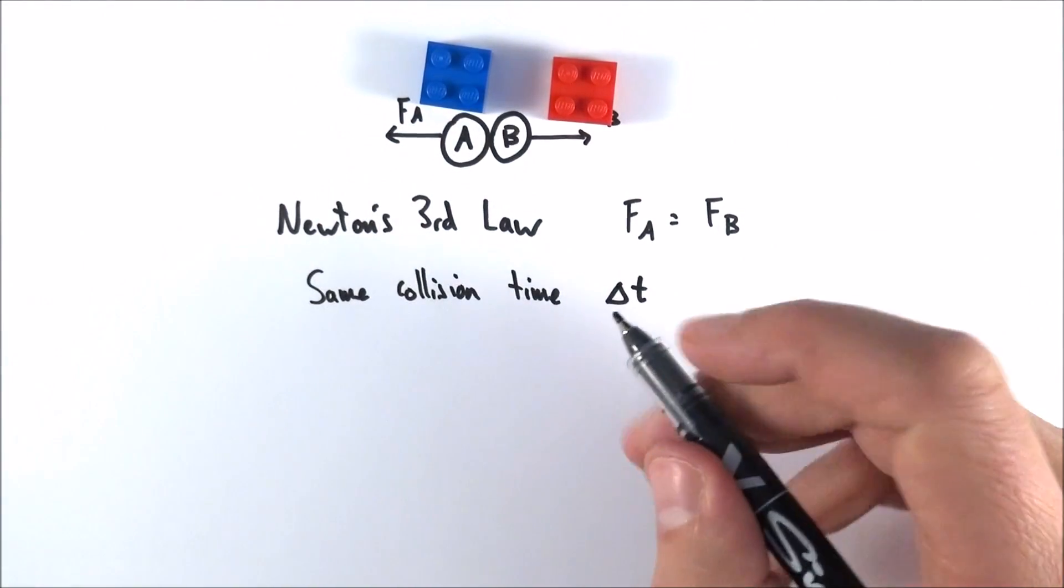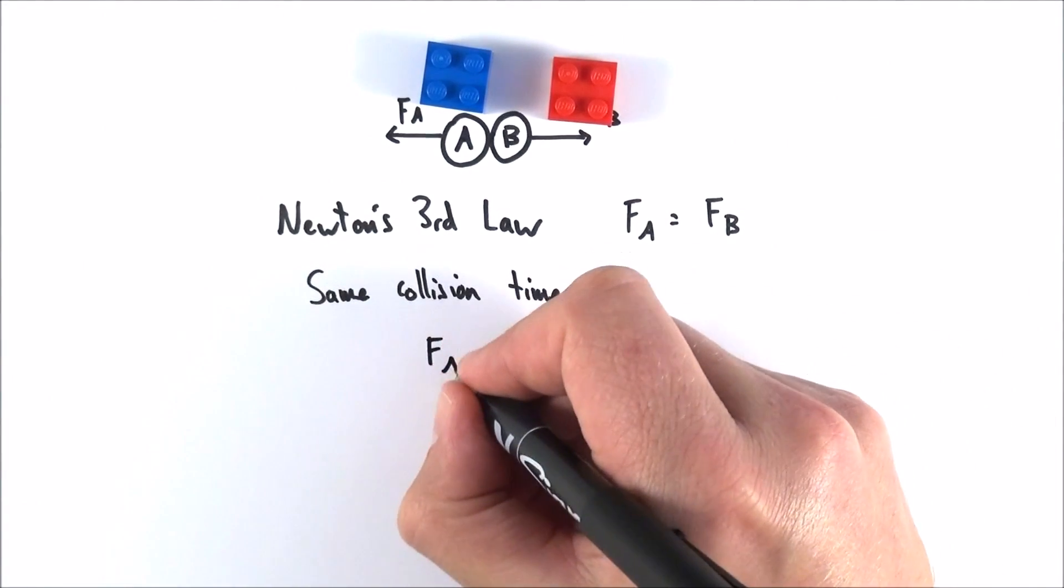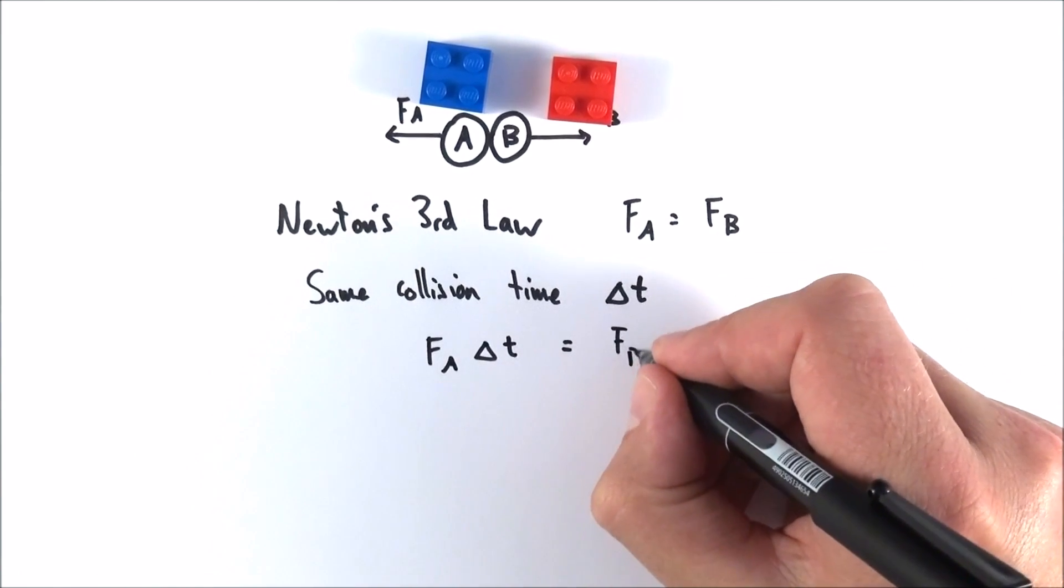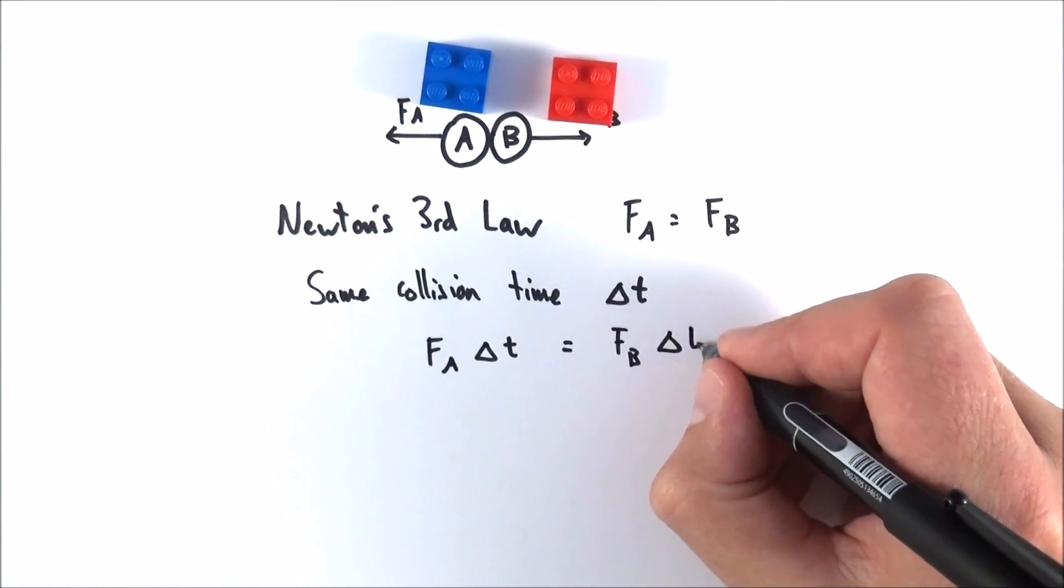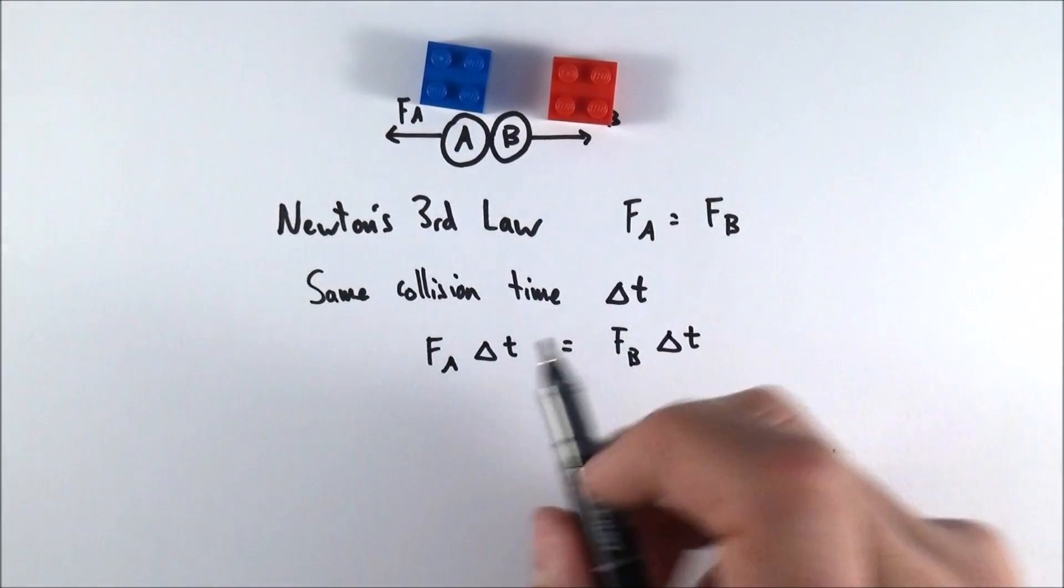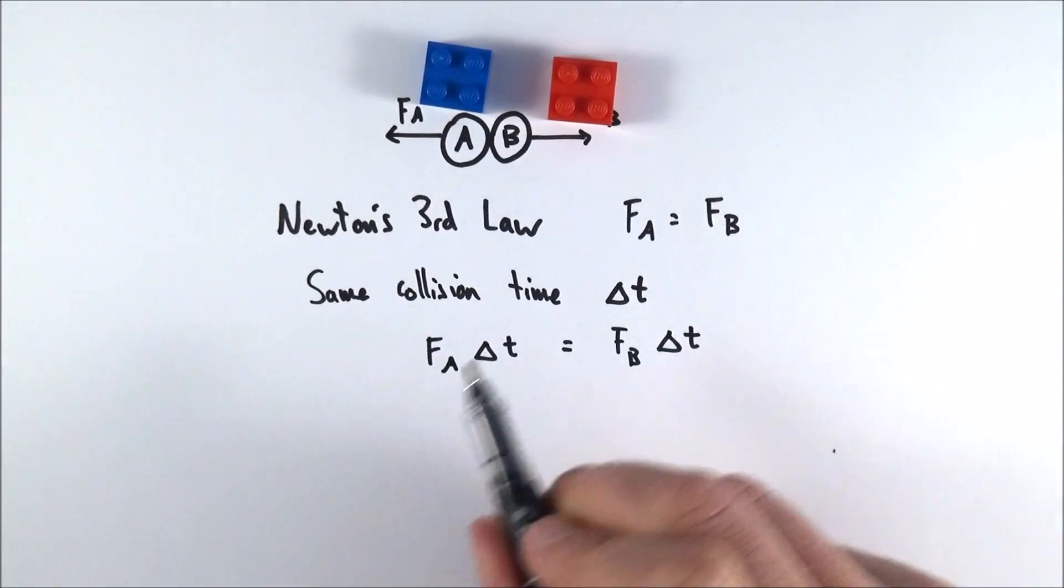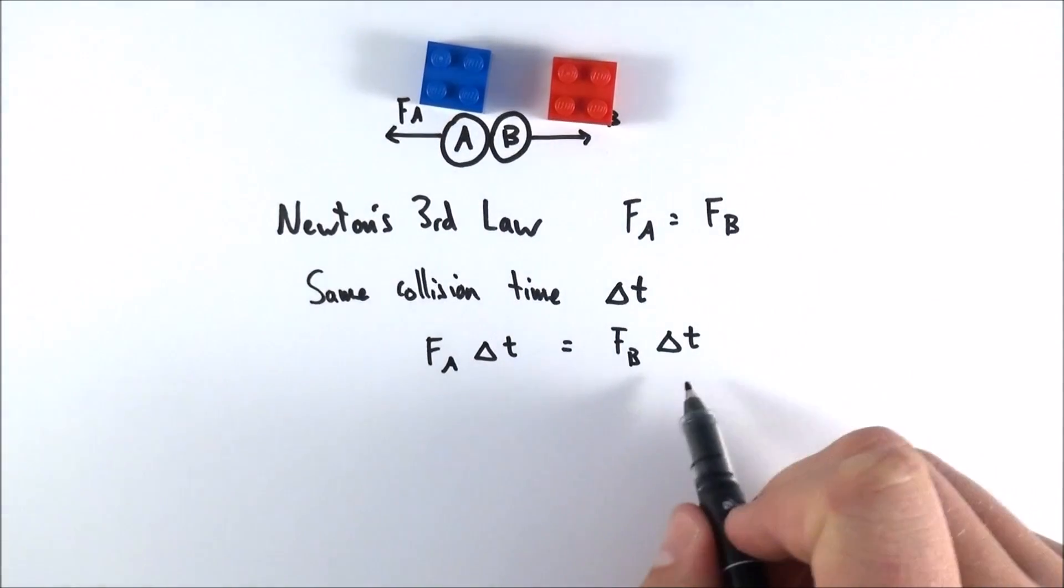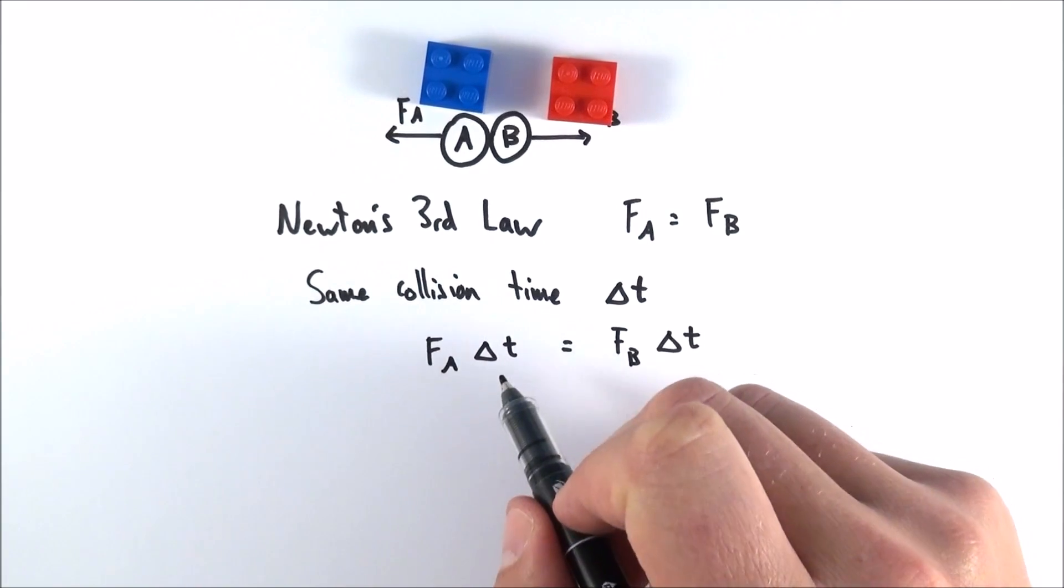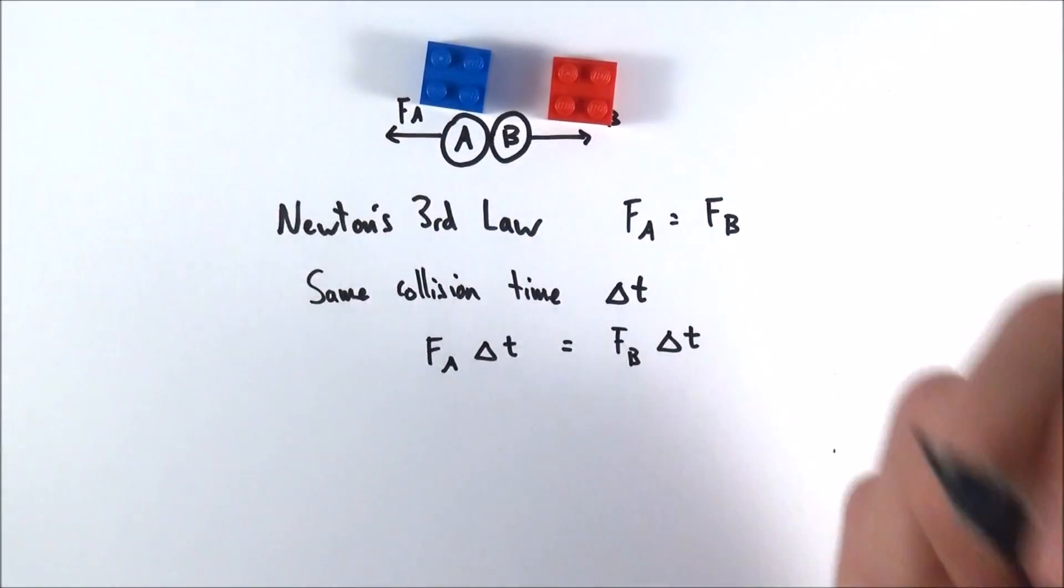And because they have the same collision time, that means FA times the change in time is going to be equal to FB multiplied by the time for that collision. So I've just put in a time into both of this. And what we have now are some impulses. The impulse is equal to the force multiplied by the time for which it acts, and what that does is it changes the momentum.